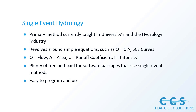This method revolves around the simple equation Q equals CIA. We've got Q — the flow or discharge runoff off the site area, which is usually in acreage — C, a runoff coefficient, which is dimensionless based on the soil at the parcel — and I, the intensity of the rainfall in inches per hour. There are plenty of free and paid software packages that use this method, and it's easy to program and use with only a few variables.